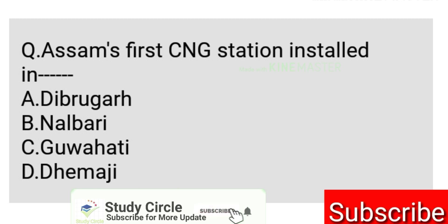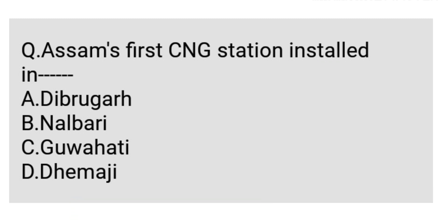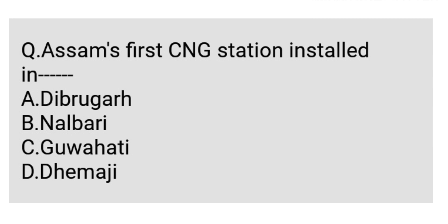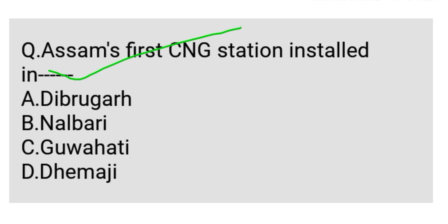First CNG Station installed in India — which district of Assam? Option A: Dibrugarh. Option B: Nalbari. Option C: Guwahati. Option D: Dhemaji. Assam's potham CNG Station tolor koonkhan district installed kori se — yahudhaa tartu hol A — Dibrugarh.